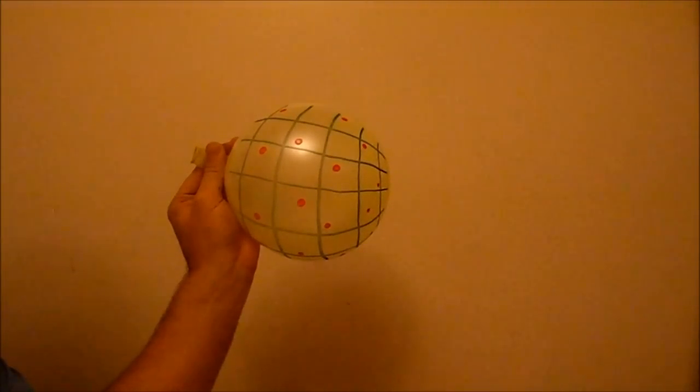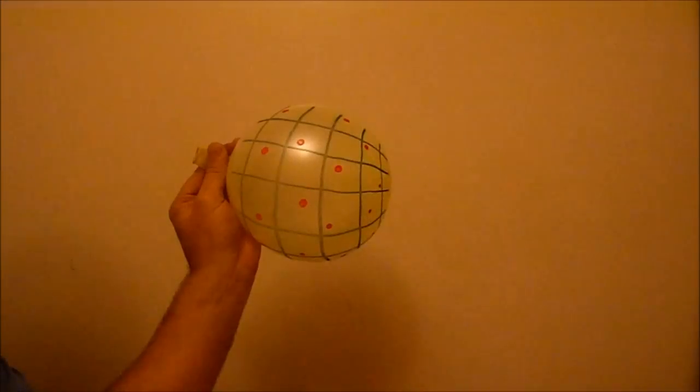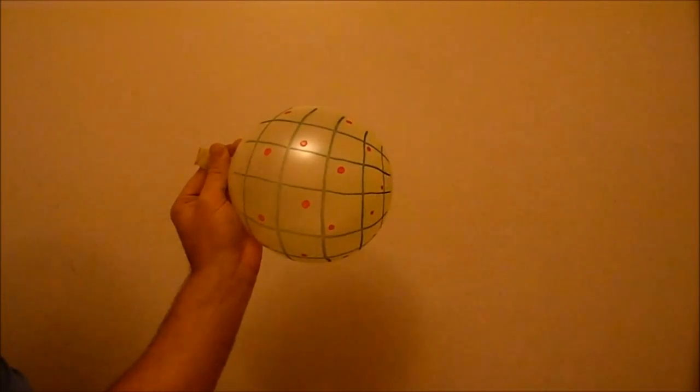If we consider the surface of the balloon to be our three-dimensional space, the red dots as galaxies and the green lines as a coordinate system spread across the entire universe, we see that the galaxies are fixed within that coordinate system.